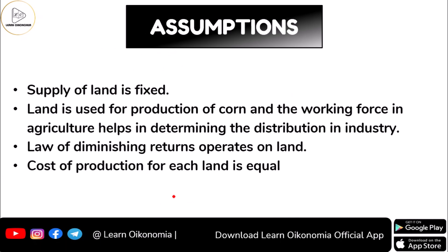Let's come to the assumptions of the theory. Ricardo assumed that land is fixed — it is limited or scarce. He also assumes that land is used for the production of corn, and the working force in agriculture helps in determining the distribution in the industry. Right now, we are just considering land as used for the production of some corn or food grain.